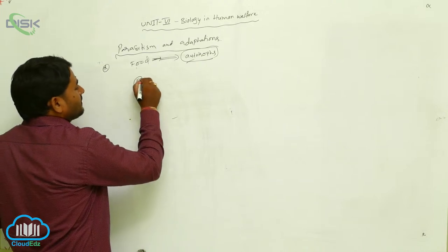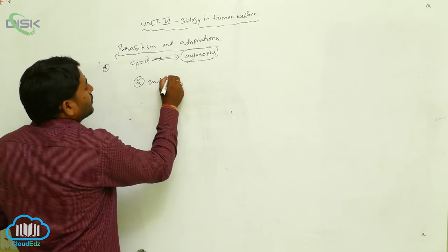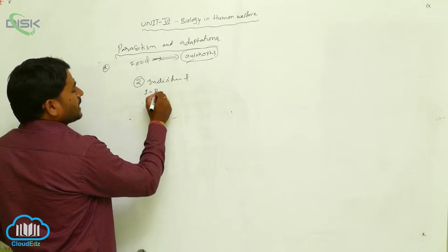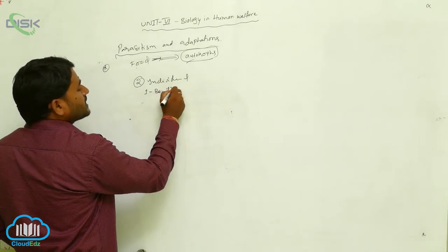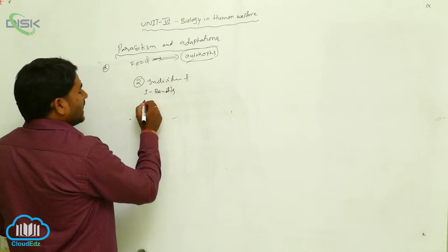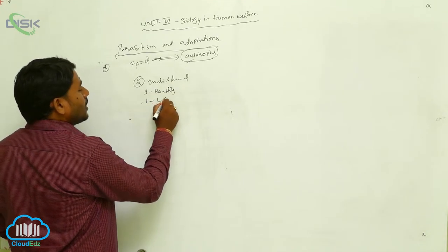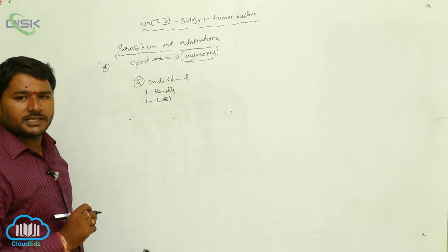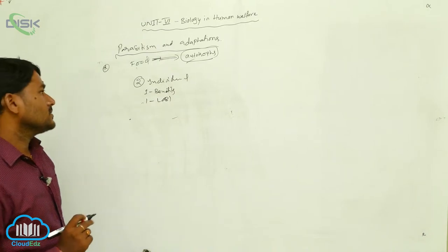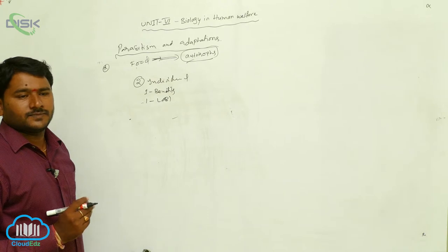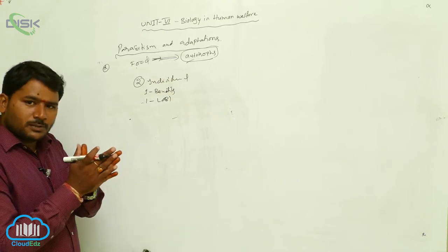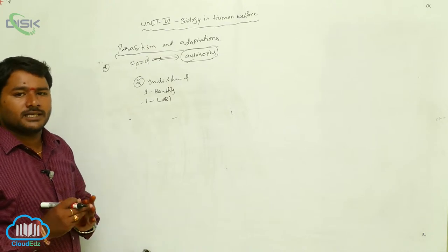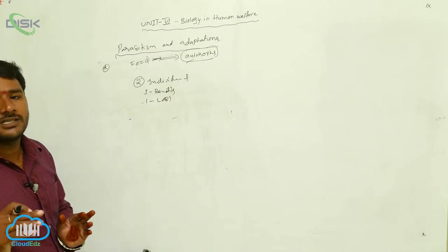In parasitism, two individuals are living together, in which one is getting benefits and another one is getting loss or affected. This is called as parasitism — an intimate association between two living organisms in which one is benefited and the second one is lost or affected.